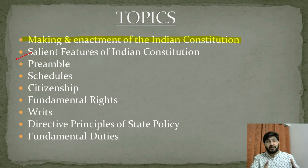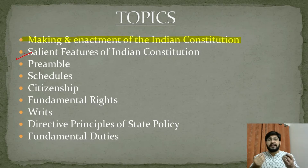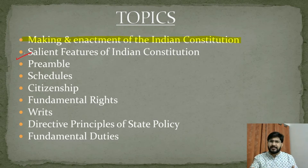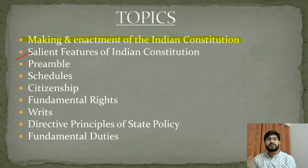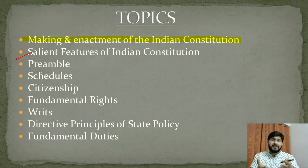The content of our Constitution has been borrowed from constitutions of different countries — some elements from the UK, some from the USA, some from Canada, Ireland, and about 10 countries in total. These elements were modified according to our country's circumstances and enshrined in our Constitution. We also have features like single citizenship, federalism with a strong centre, and a parliamentary form of government. Our Constitution is partly rigid and partly flexible, and it grants universal adult franchise — the right to vote.